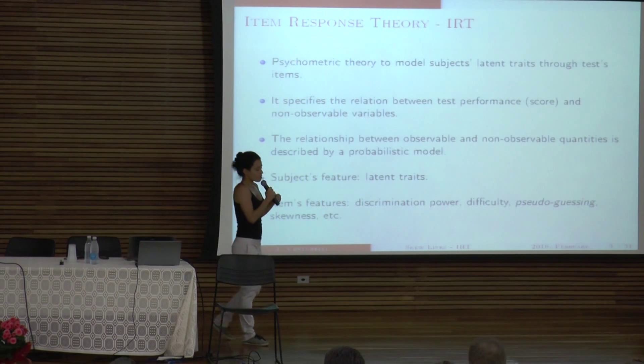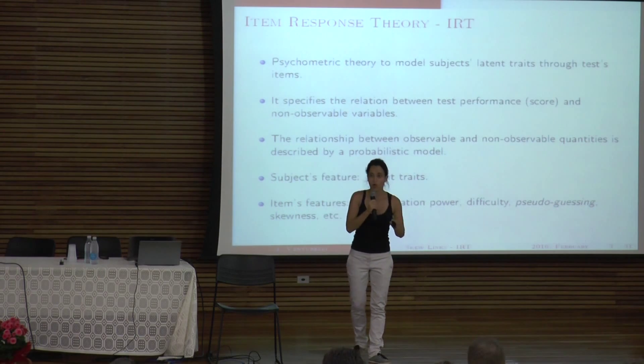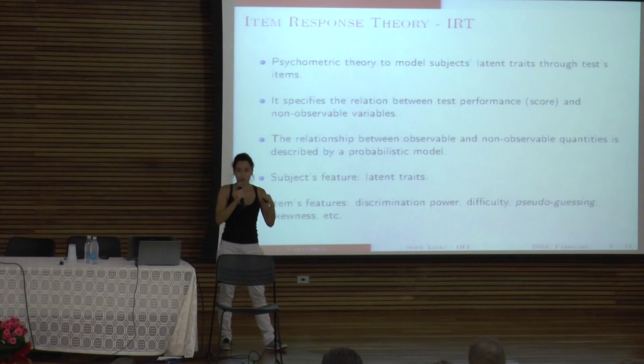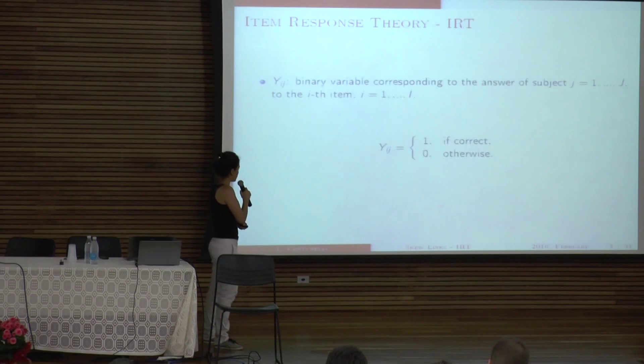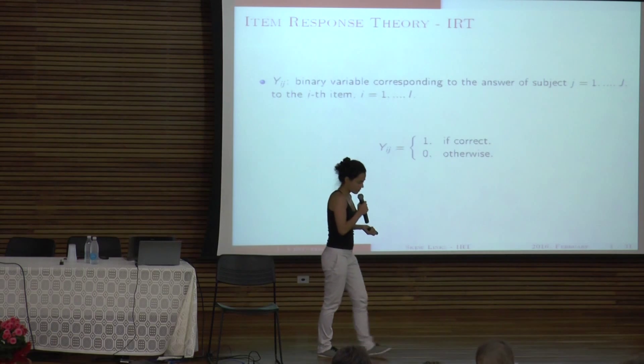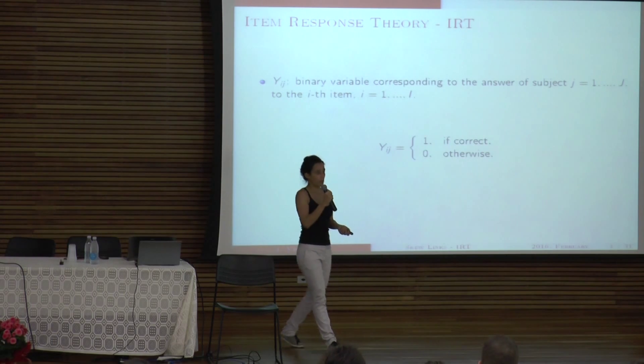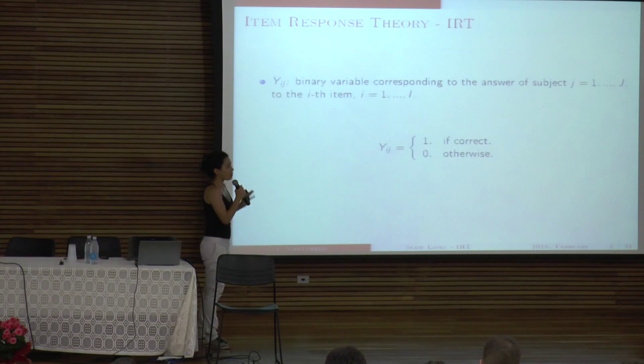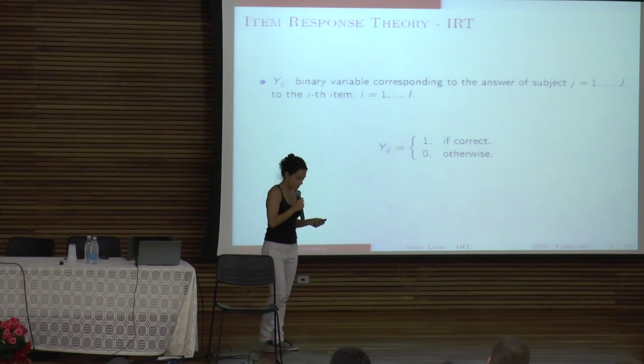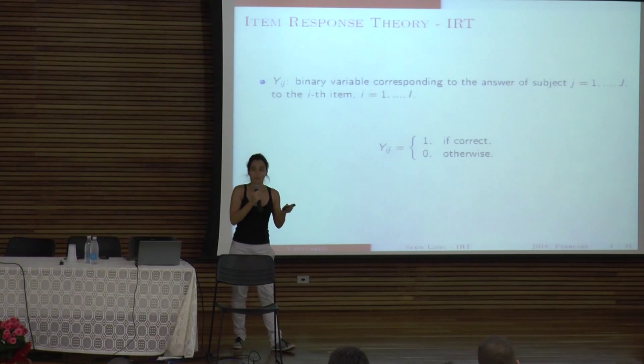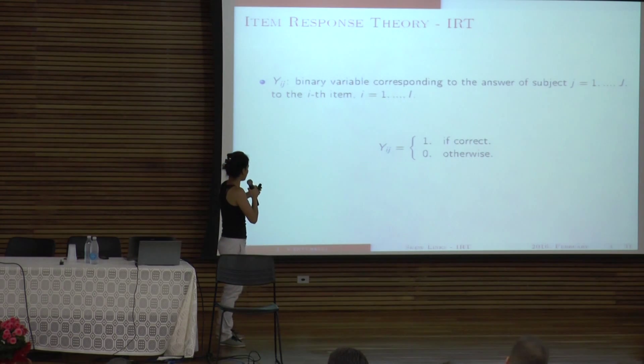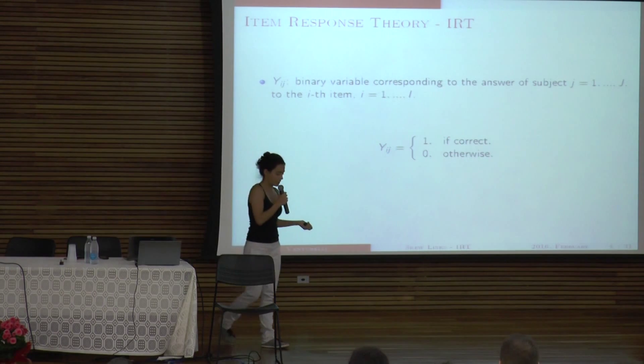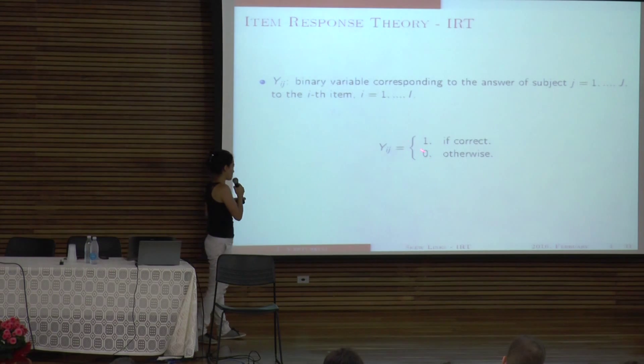So for each item, we would have a curve that will describe your ability related to your performance. So usually, item response theory has a bunch of models and mostly it depends on how the items are. Like the type of questions that I work, it's like binary questions. That is, either the person gets the question, the item, right or wrong. So I will say that Y is one if the subject endorsed an item and zero otherwise.